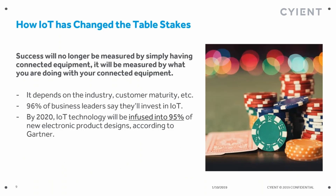IoT really is a game changer for every company out there today. We consider it table stakes. Your success is not going to be measured by simply having connected equipment — it's going to be measured by what you're doing with that connected equipment. Wall Street is now asking not just 'are you connecting your equipment?' but 'what are you doing with it?' According to Gartner, 96% of business leaders say they're going to invest in IoT. So if everybody's investing in it, it's table stakes. And by 2020, if 95% of products are going to have IoT technology designed in, we need to think about how we're going to get that investment out.